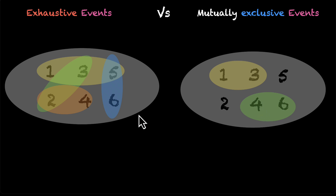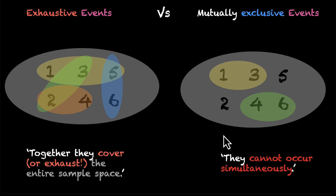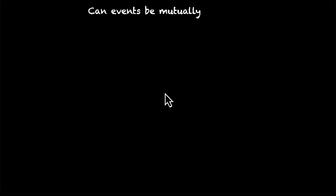So this is the basic difference between exhaustive and mutually exclusive events. Together they cover the entire sample space — they're exhaustive events. For mutually exclusive events, they cannot occur simultaneously; if they are occurring simultaneously, they're not mutually exclusive. And you might be thinking: can events be both mutually exclusive and exhaustive? That's the question we'll cover next.